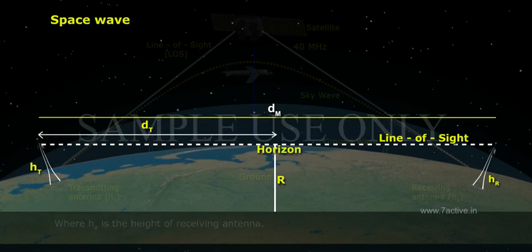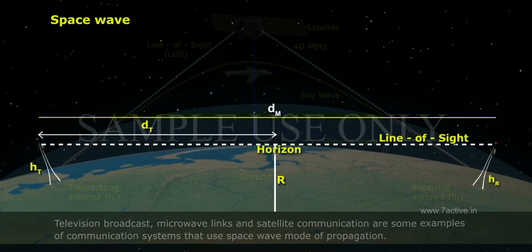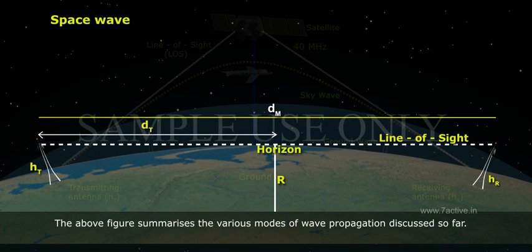Television broadcast, microwave links, and satellite communication are some examples of communication systems that use space wave mode of propagation. The above figure summarizes the various modes of wave propagation discussed so far.